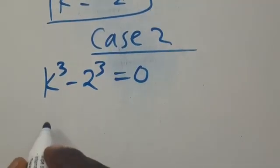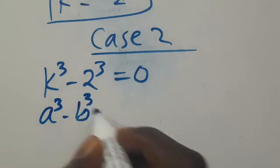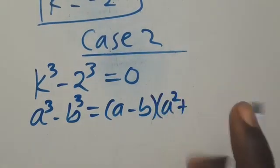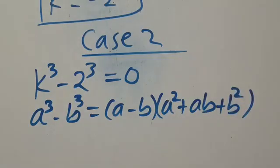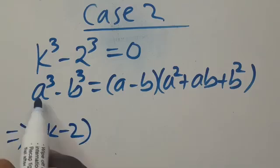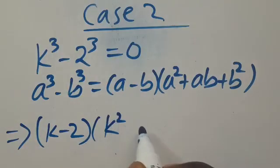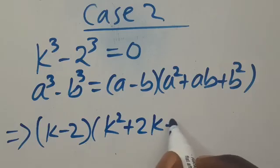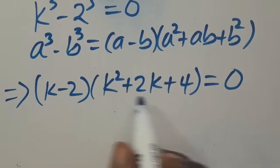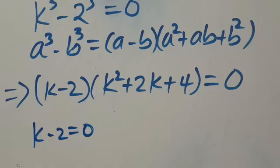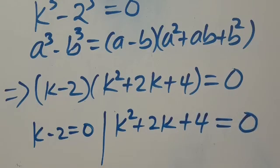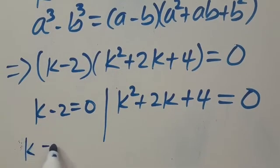This is the difference of two cubes. When you have a to the power of 3 minus b to the power of 3, this equals a minus b, all in brackets, multiplied by a squared plus ab plus b squared. Applying it here, with a equal to k and b equal to 2, we get k minus 2, multiplied by k squared plus 2k plus 4, equals 0. For this expression to equal 0, either k minus 2 equals 0 or k squared plus 2k plus 4 equals 0. So we get the second real solution: k equals 2.